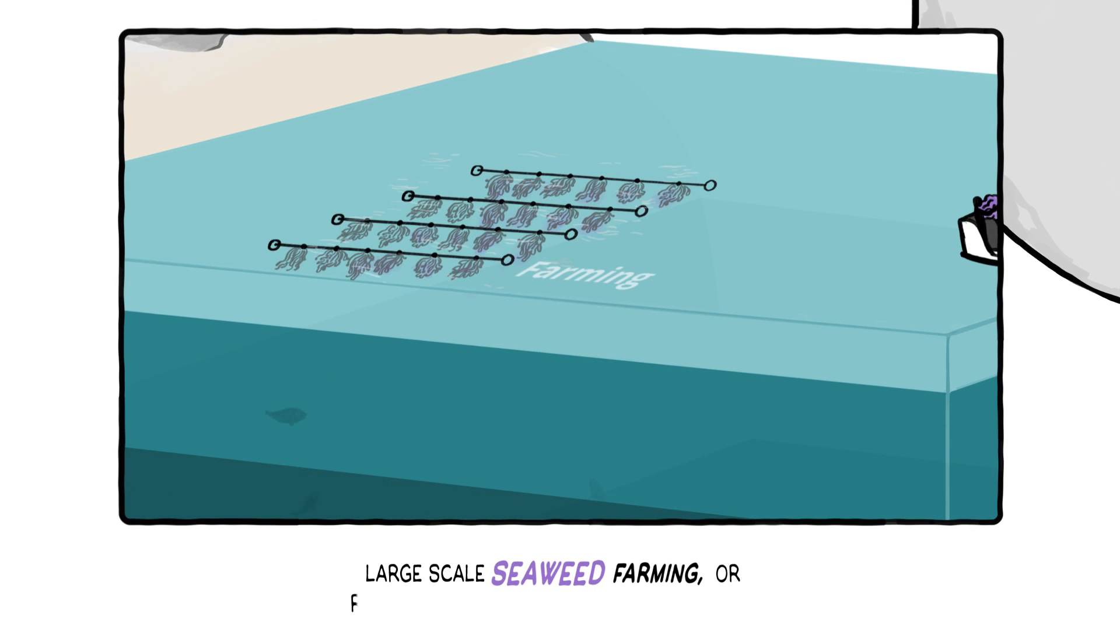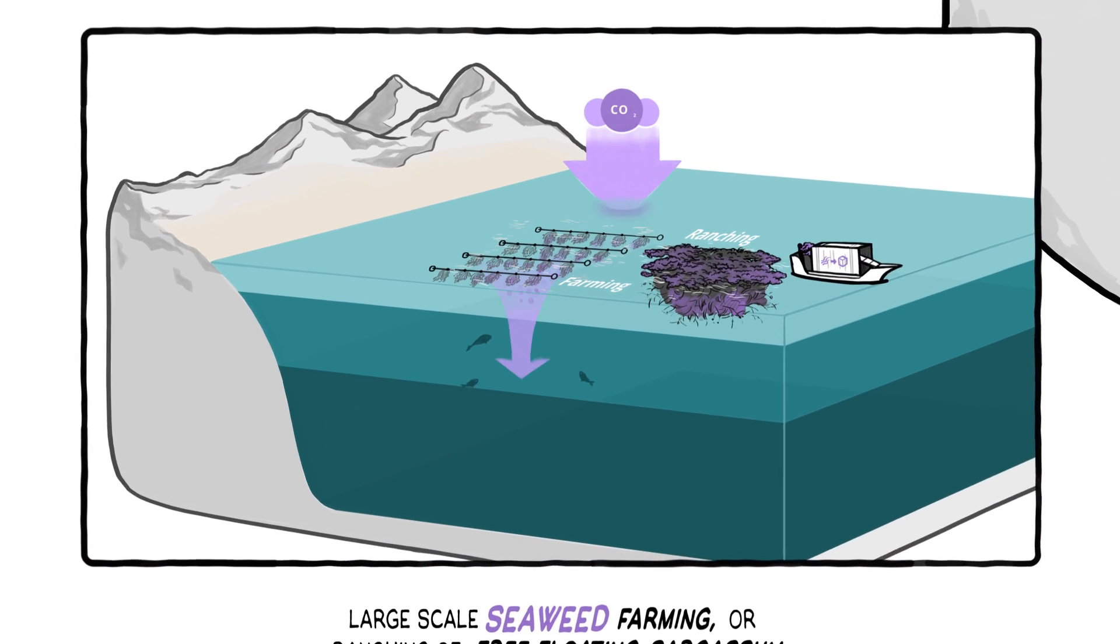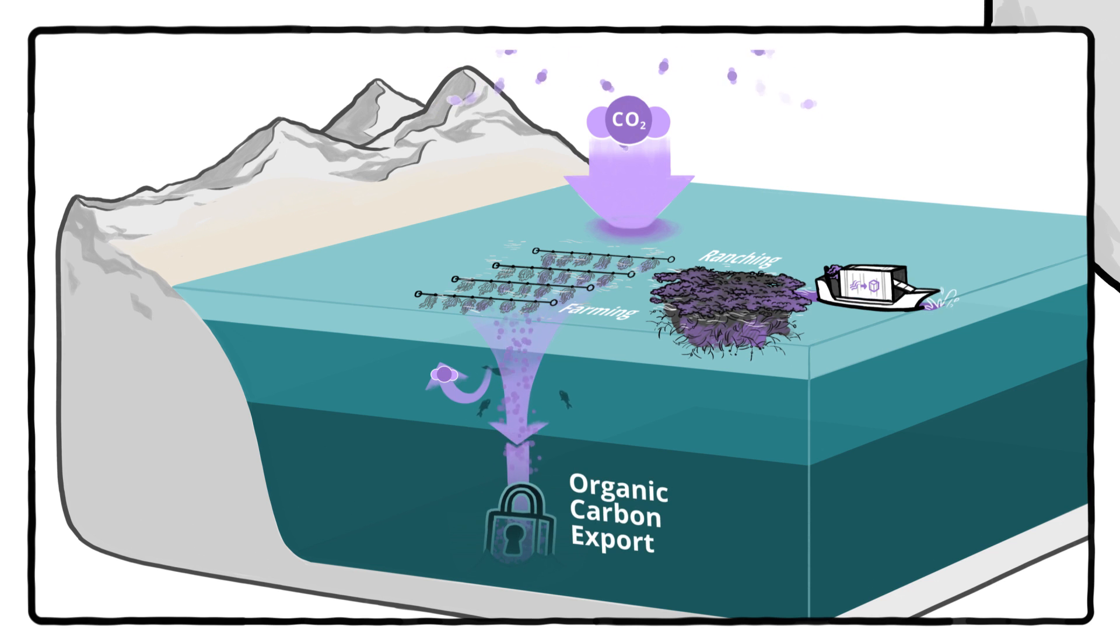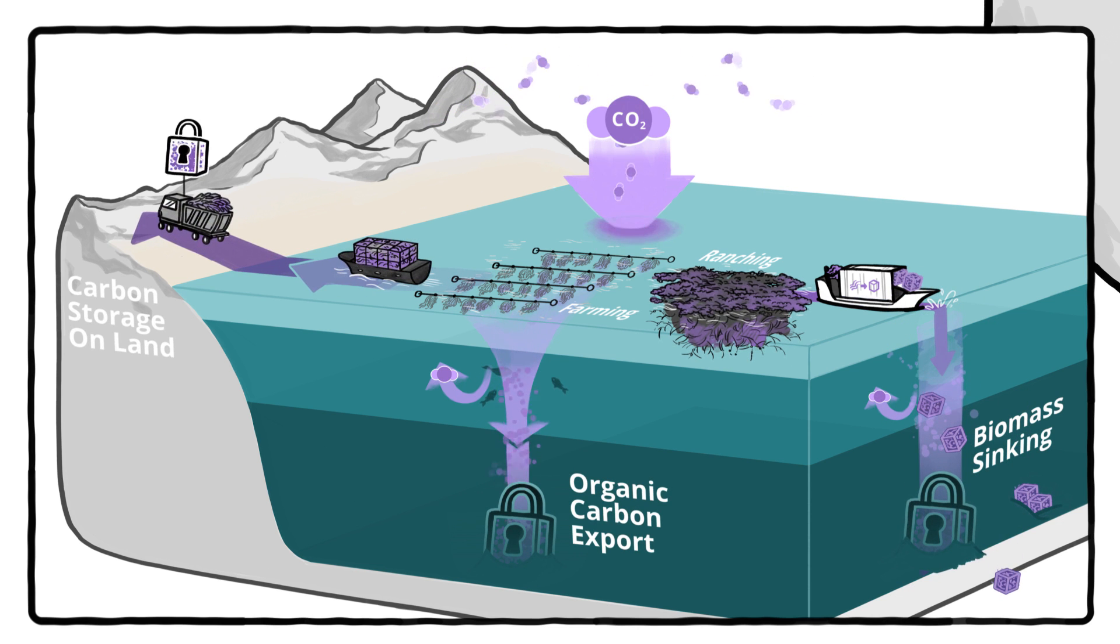For example, large-scale seaweed farming or ranching of free-floating sargassum can remove the carbon stored in plant biomass by sinking it to the ocean floor or by locking it up in long-lived bioproducts.